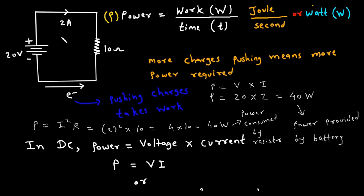Now let's take a look at this circuit. If we want to find the power in this circuit, then P is equal to V into I, where P is the power, V is the voltage, and I is the current. Here the value of voltage is 20V and the value of current is 2 Ampere. So if we multiply 20 into 2, we get 40W, which is the power provided by the battery. That means this battery is providing 40W.